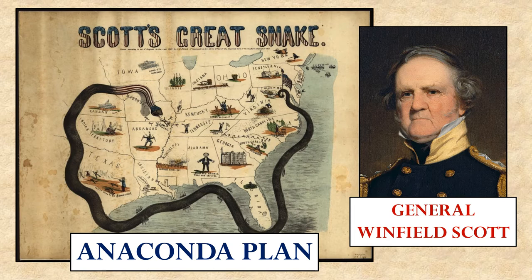General Winfield Scott, the man who had become famous during the Mexican-American War and had previously run for president, suggested a strategy to defeat the South. It became known as the Anaconda Plan. The idea was to encircle the South and strangle it, the way a constrictor snake might. This would be done by cutting off all the southern waterways — on the coast, cutting off ports like Charleston and New Orleans, and inland, taking control of rivers so that the South could not do trade amongst itself or with other countries, to economically harm the South and eventually defeat it.